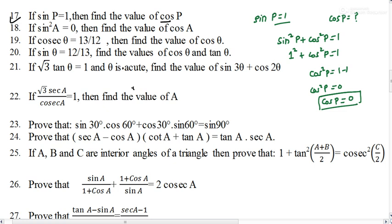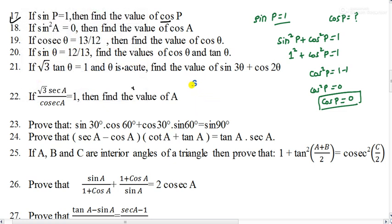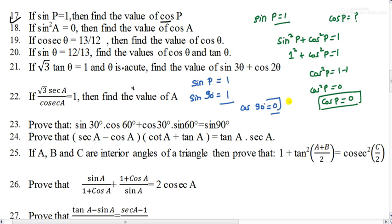Let me solve it using another method as well. For what value of P will sin equal 1? We know that sin 90° = 1. So what will cos 90° be? It is 0. In both methods we are getting the answer as 0. I hope it is clear.